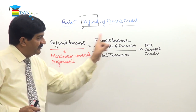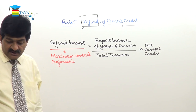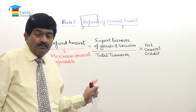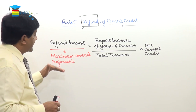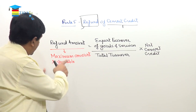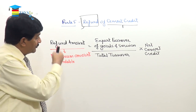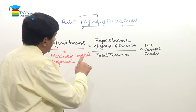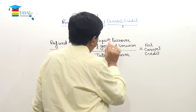So the maximum amount that is refundable will be calculated as per this formula, provided the assessee is having that much credit. If that much credit is not available, then either the credit available or the amount computed as per this formula — whichever is less — only that much amount will be refunded. So whichever is less, either credit or amount computed as per the formula, that is refundable.